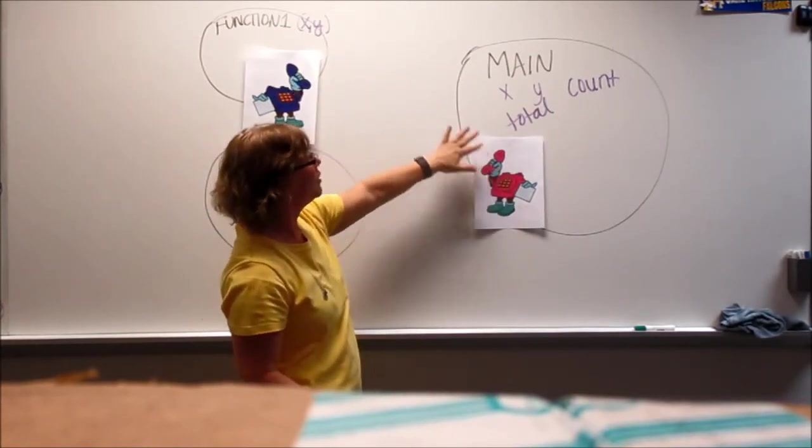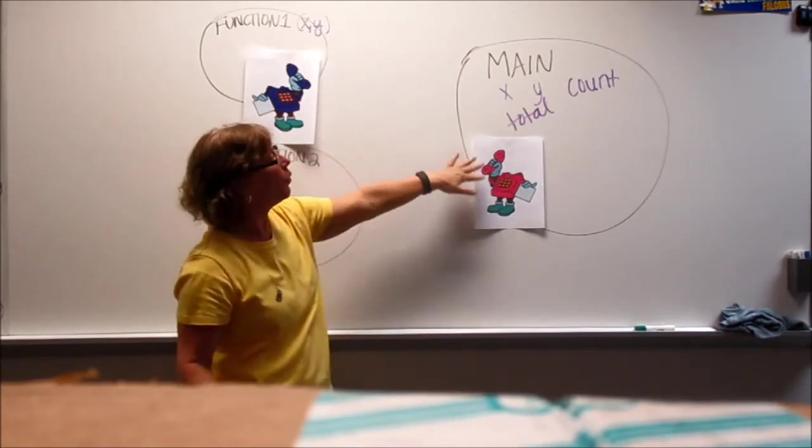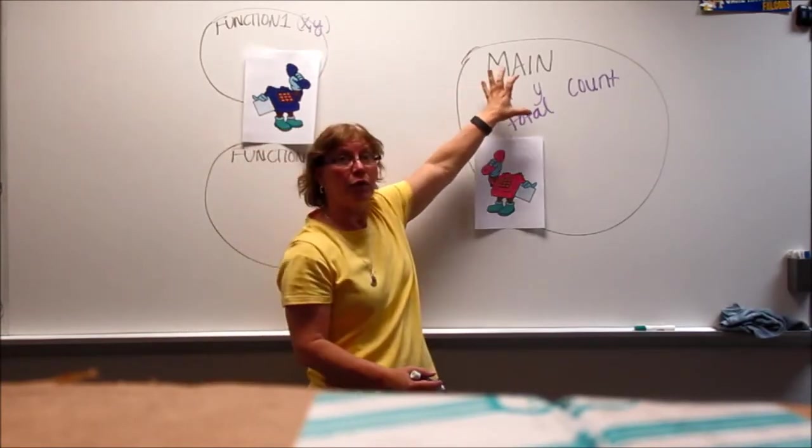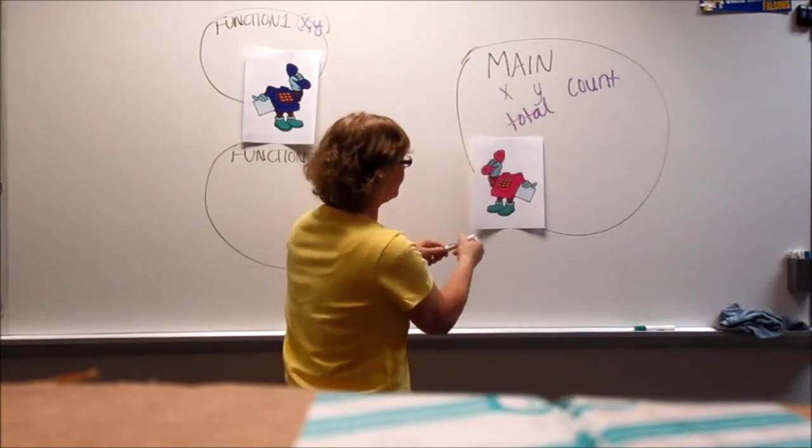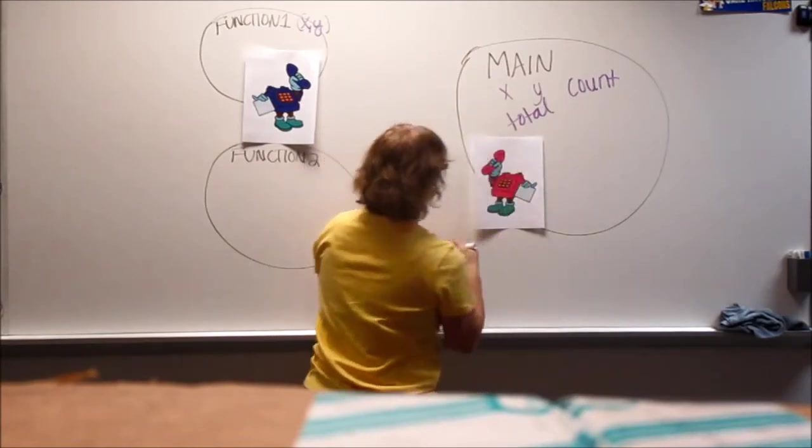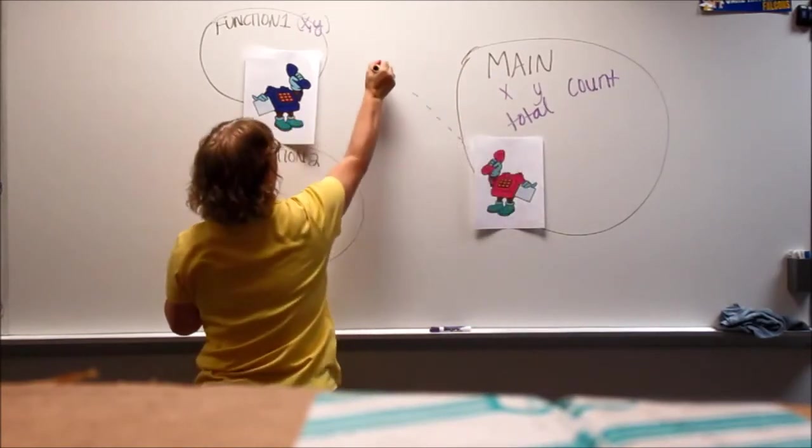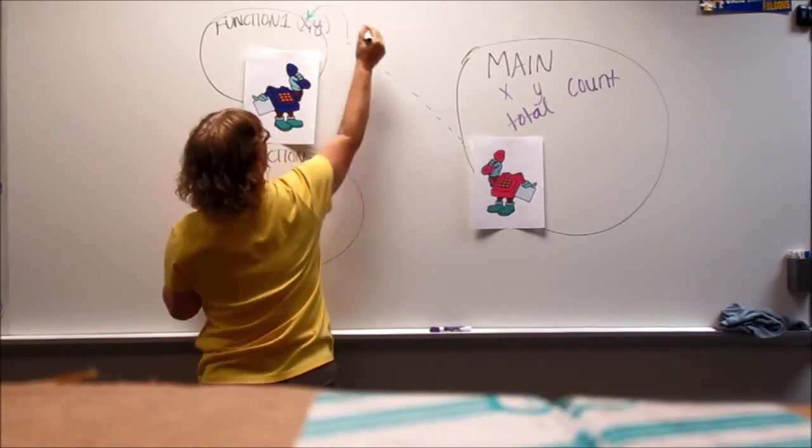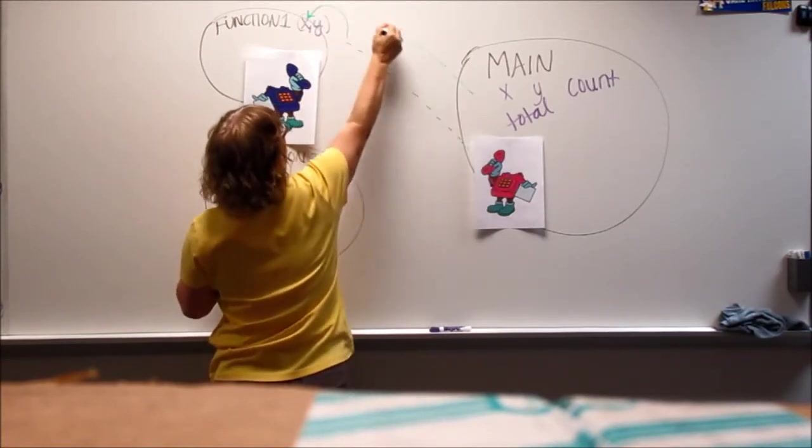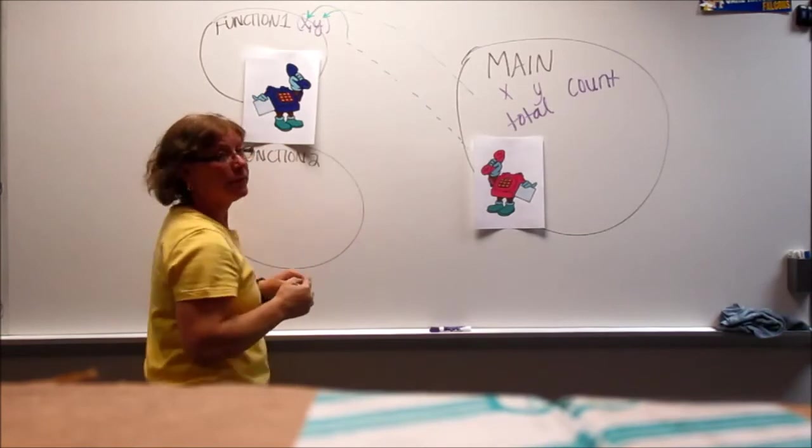So over the phone, the person's going to tell them what the value of x is and what the value of y is. Now the x and y don't leave. They stay here. But the value just goes over the phone line and the value gets put into x and the y value gets put into y.